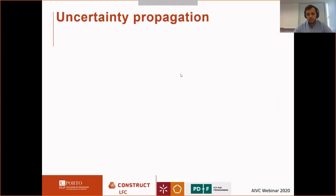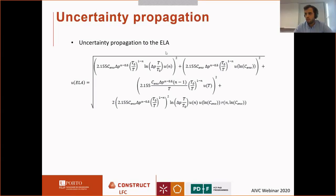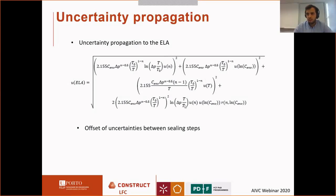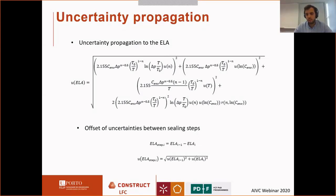How do we propagate the uncertainty from one step to the other? For the effective leakage area we have different components: the airflow exponent, the airflow coefficient, temperature, the second-order effect for the correlation of these two. The offset of uncertainties between sealing steps is incremental — from one sealing step to the next we subtract the effective leakage area of one group of components from the other, but the uncertainty sums, so it accumulates.